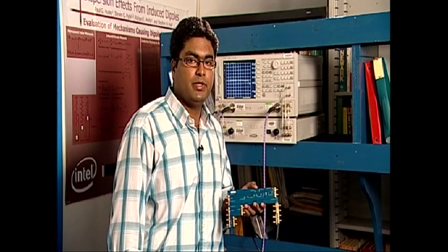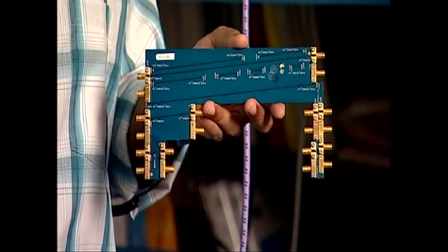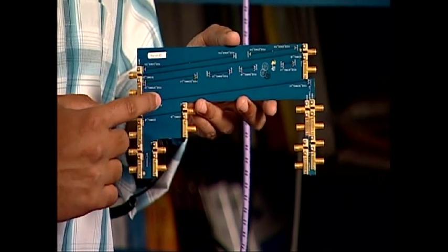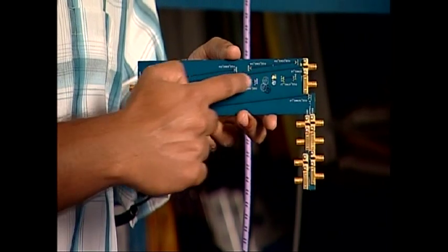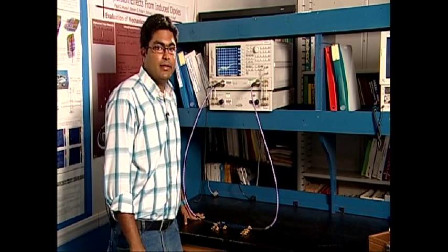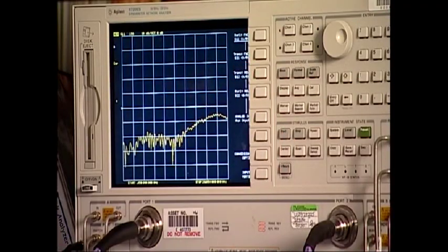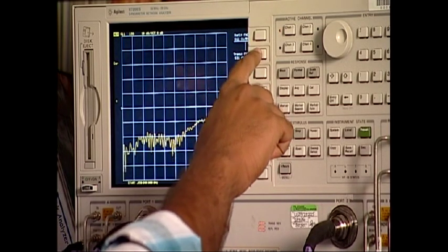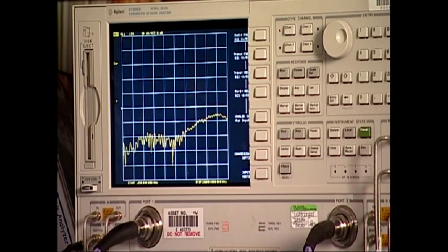Now since we're done with the calibration, we go ahead with measuring our board. The board that we'll be using has a couple of microstrips and strip lines. For this experiment, we'll be using the 7700 mil strip line. Now that we have connected our board to the two ports, we now select measure. And by selecting S11, S21, S12 and S22, we can analyze these S parameters.